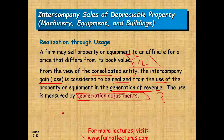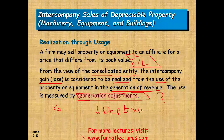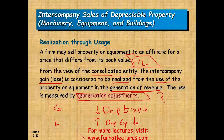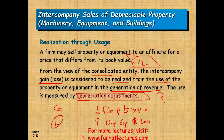If we have a gain, we reduce depreciation expense. When your expense goes down, you recognize more gain. When we have a loss, we increase depreciation expense — and as depreciation goes up, you recognize the loss. We do so in pieces because depreciation is taken over the years, not all at once. So the gains and losses will be realized through depreciation adjustment over time.